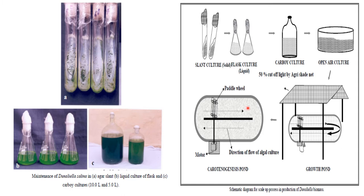After maximum growth is achieved, the culture is transferred to the carotogenic or carotogenesis pond, where the agri-shade net is removed and direct sunlight is given to the pond. This creates a stress environment for Dunaliella, stimulating beta-carotene production.